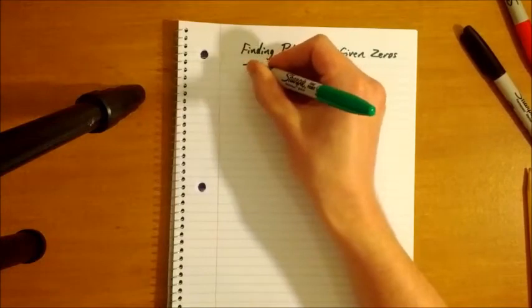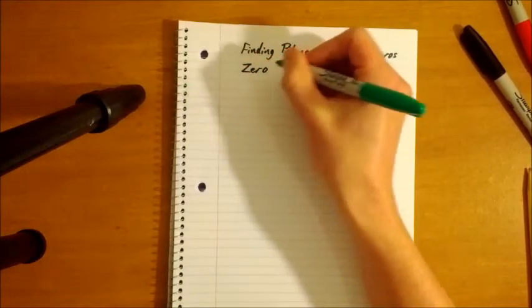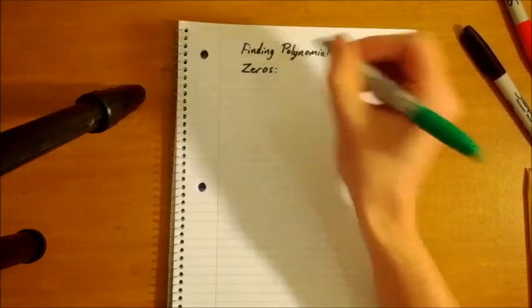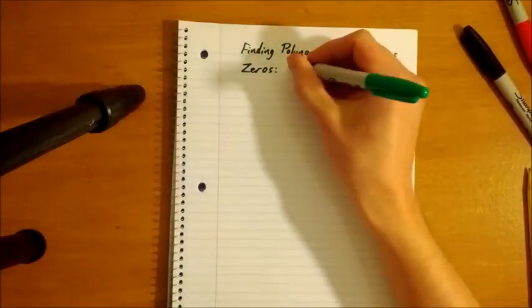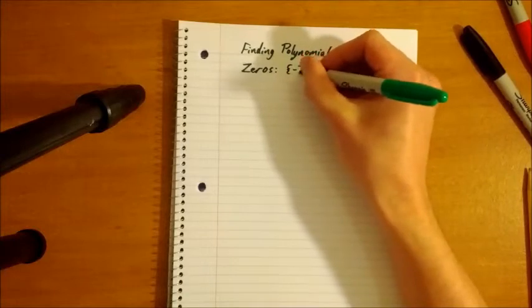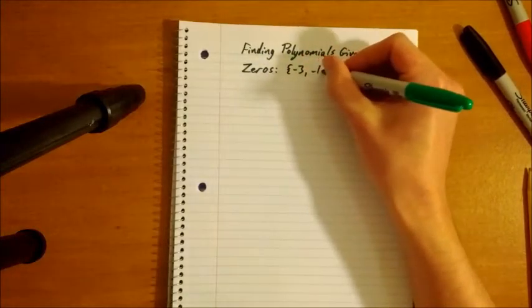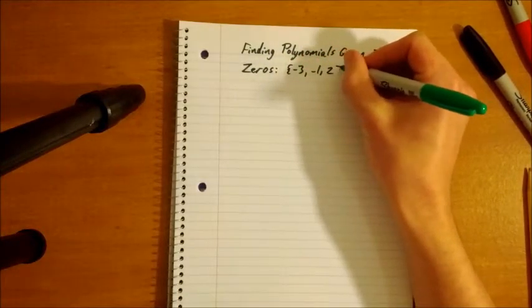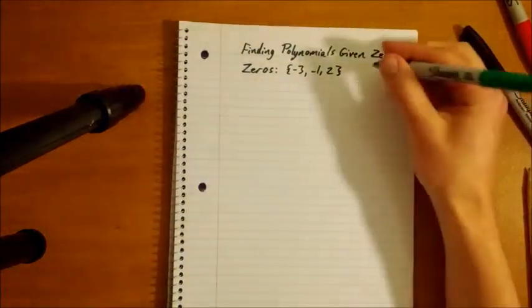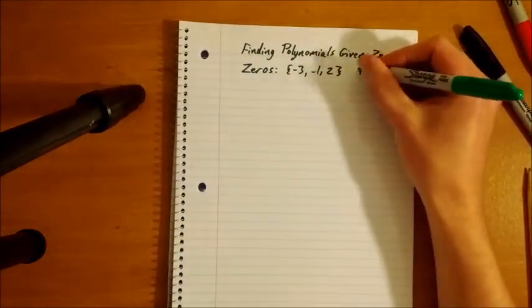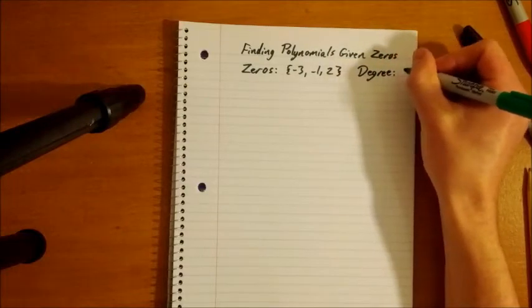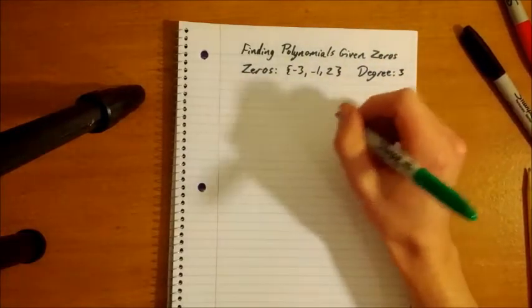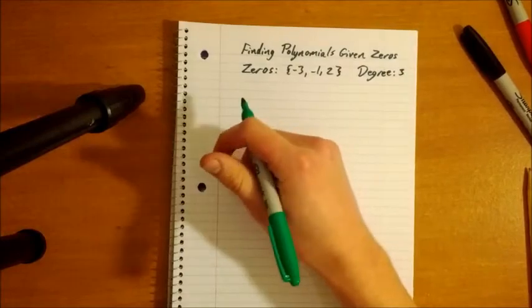For an example of such a problem that you may come across in your homework, you'll be given a set of zeros. Say you have negative three, negative one, and two. And your polynomial, it might tell you, is a degree three, meaning that the leading coefficient will be raised to the third power.